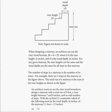This question uses the question we discussed previously for problem number 18. It uses the same two paragraphs and the same figure. An architect wants to use the riser tread formula to design a stairway with a total rise of 9 feet, a riser height between 7 and 8 inches, and an odd number of steps. With the architect's constraints, which of the following must be the tread depth in inches of the stairway? The conversion: 1 foot equals 12 inches.